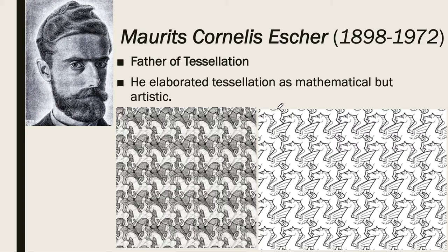We're going to talk about the kinds of tessellations: regular, semi-regular, and demi-regular. And then in this chapter we're going to touch on fractals. Escher is again famously known as the father of tessellations.